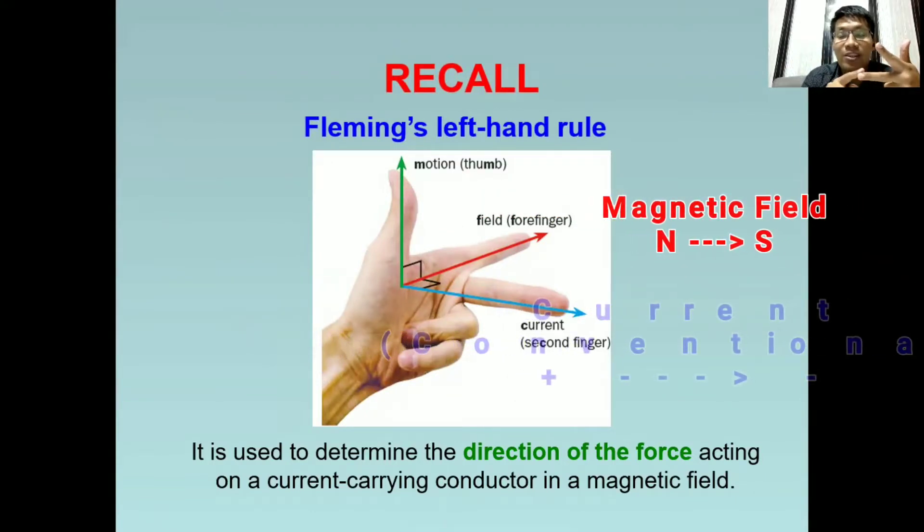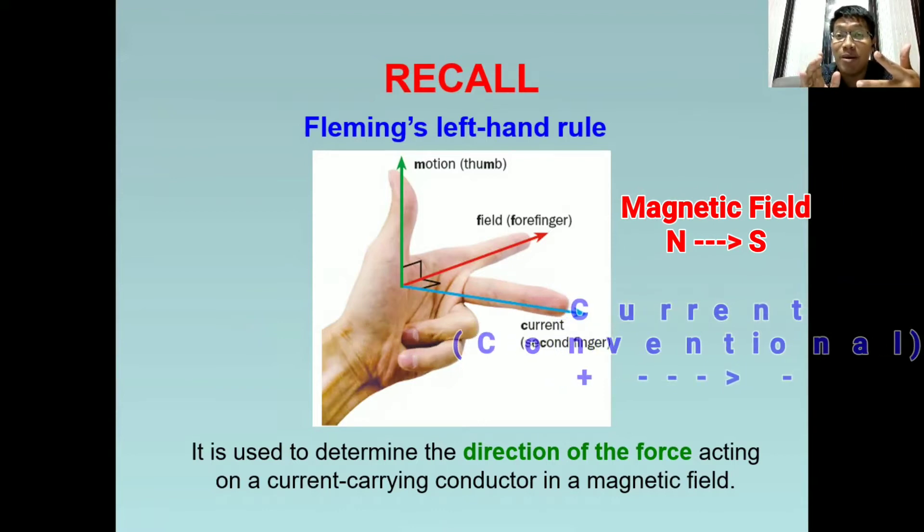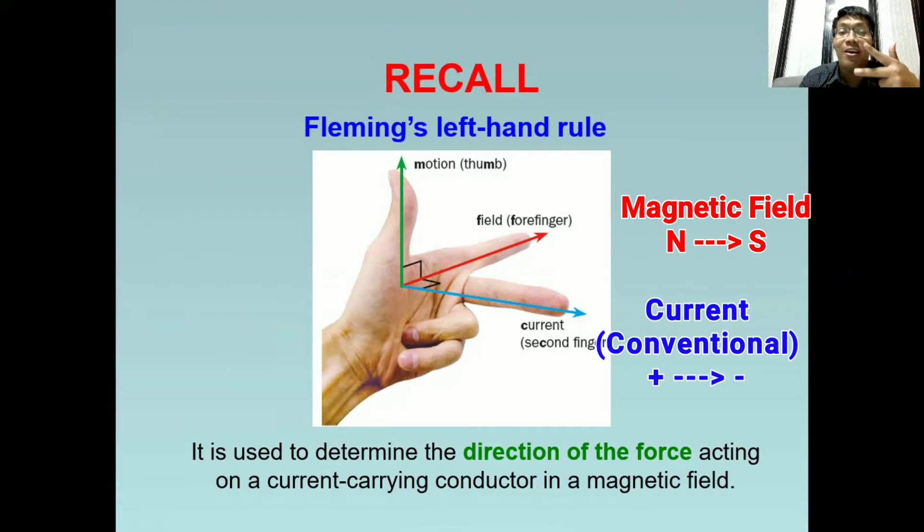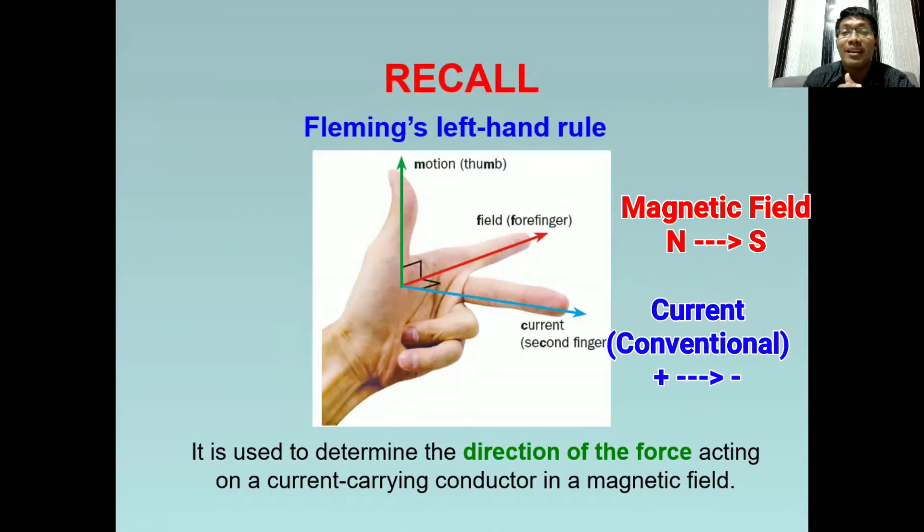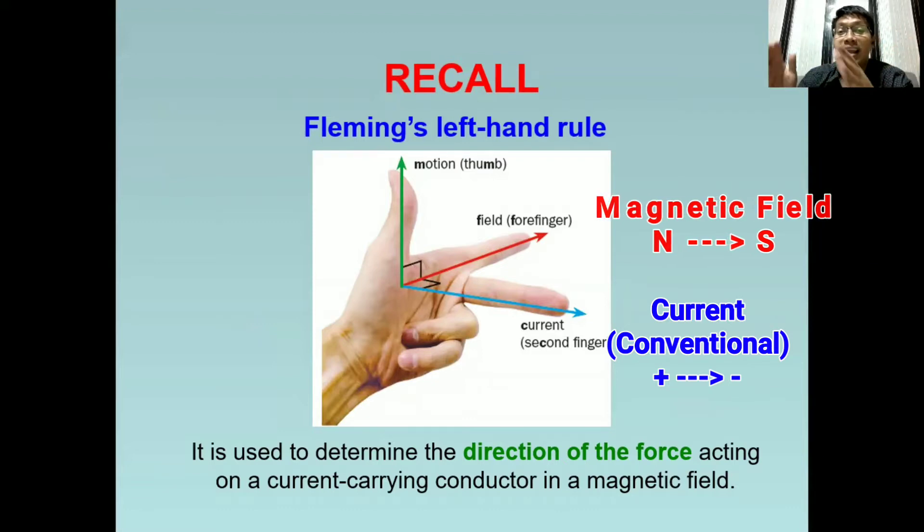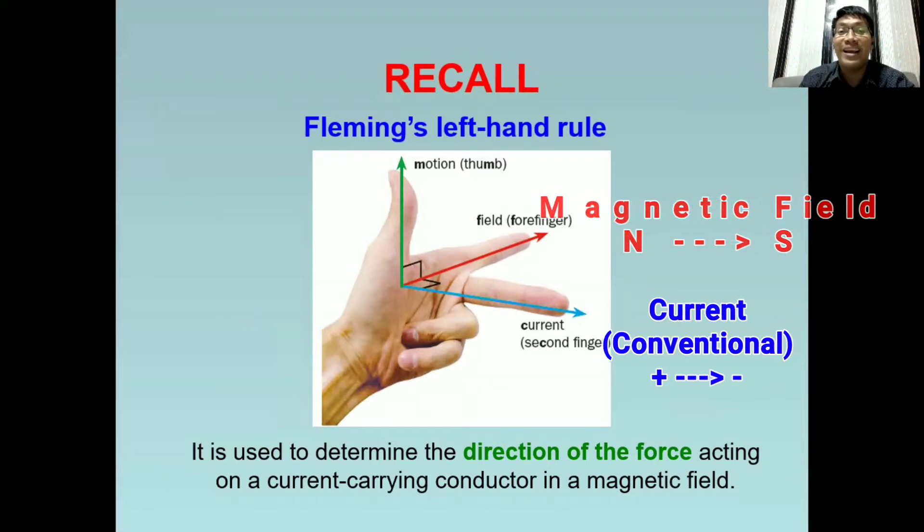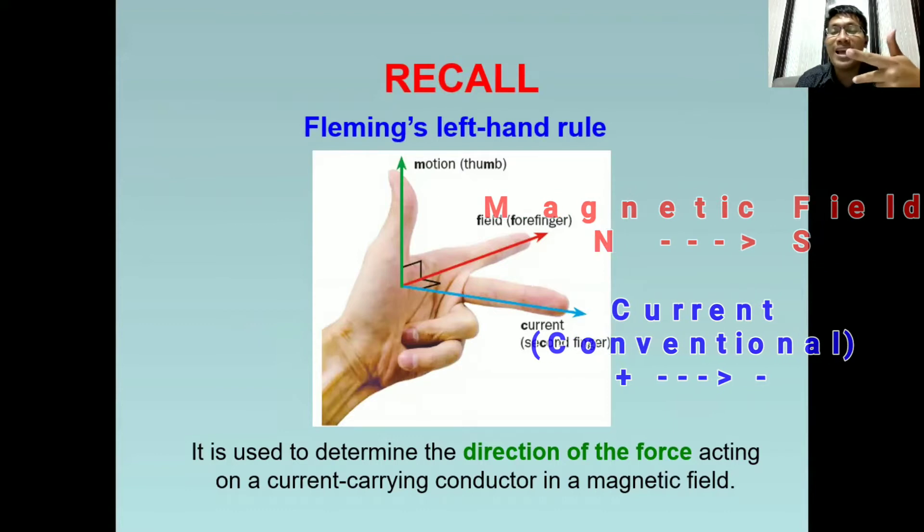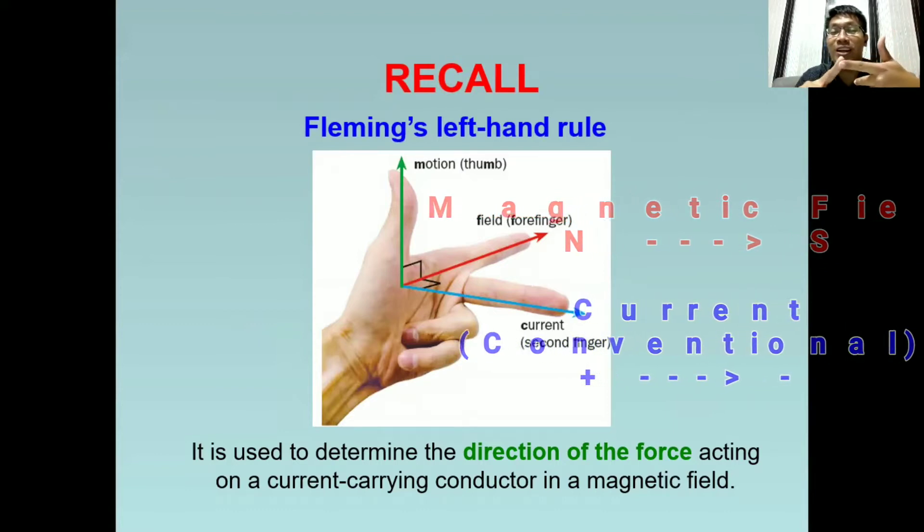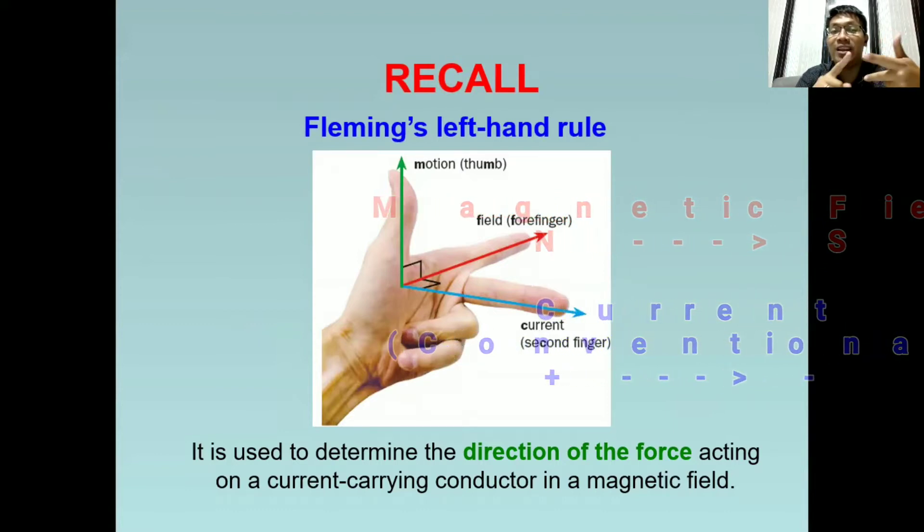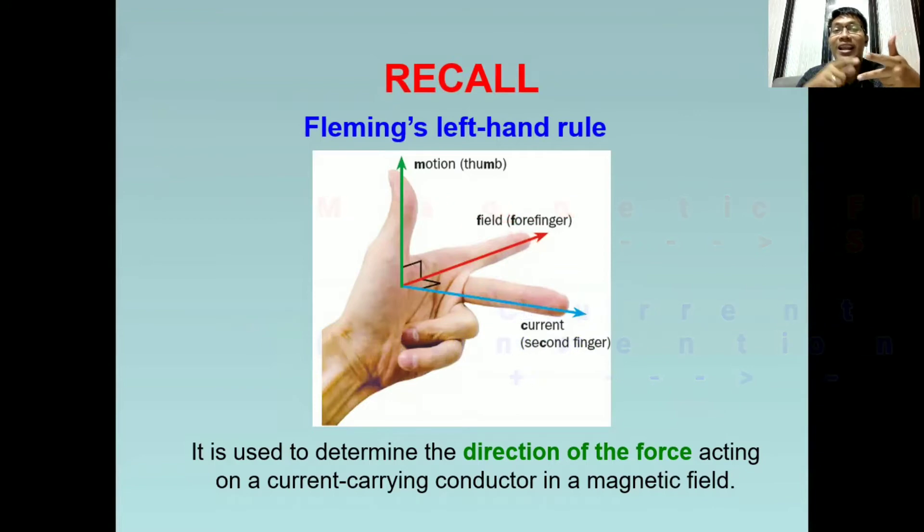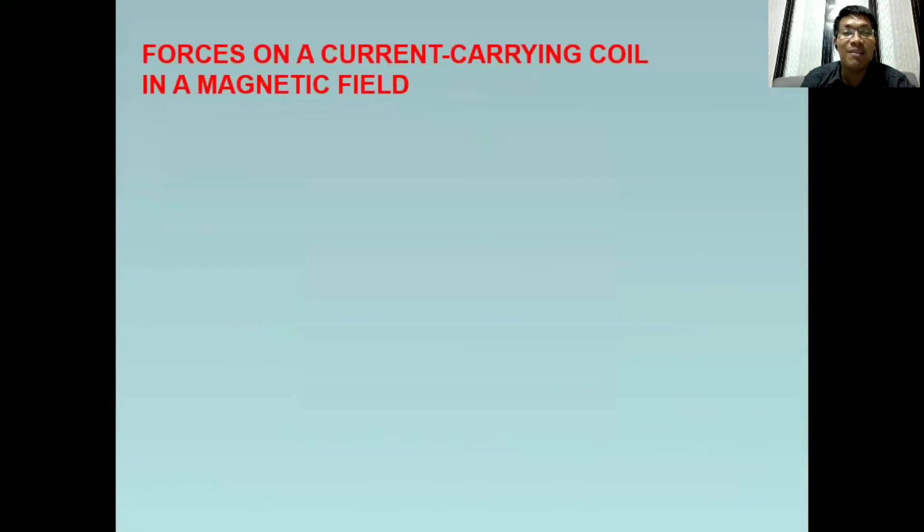For the direction of current, always remember that we are following the conventional current, which means the current is moving from positive terminal to negative terminal. And when you identify the direction of the magnetic field and current, we can determine the direction of force.